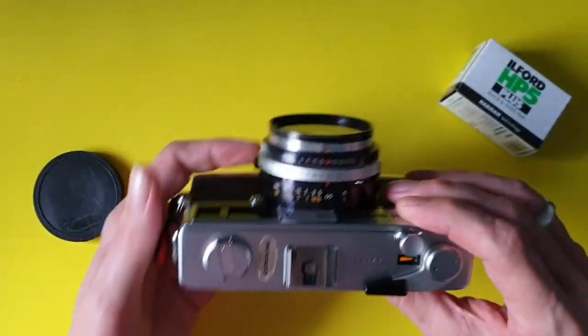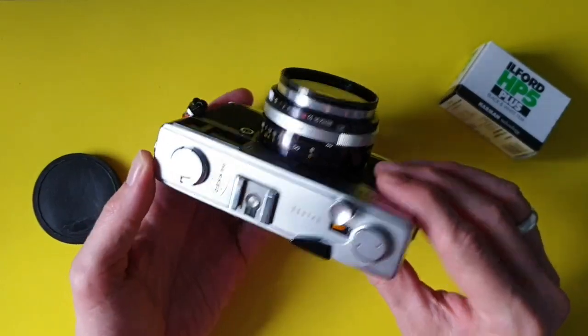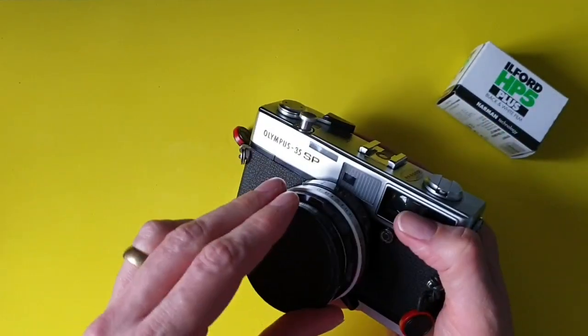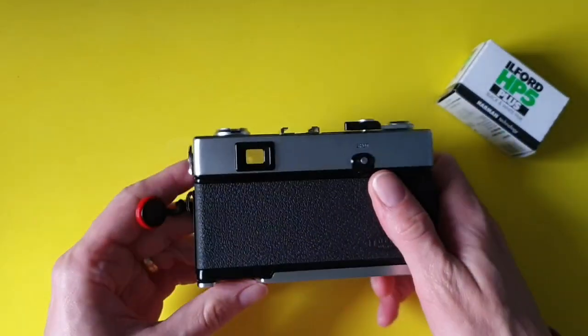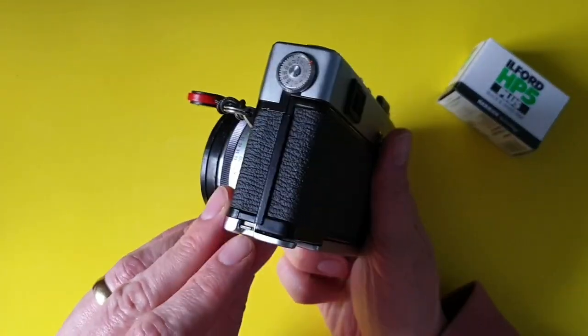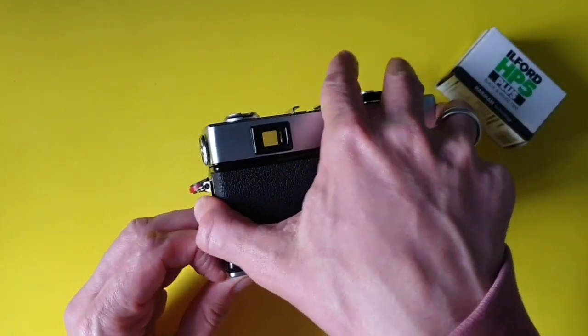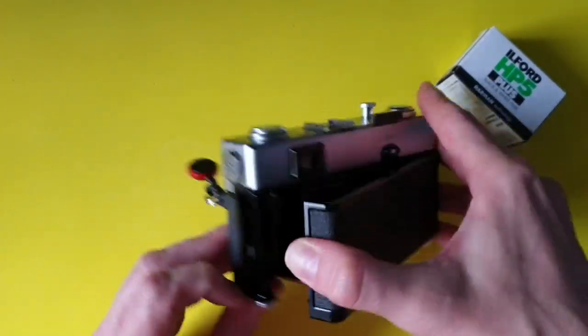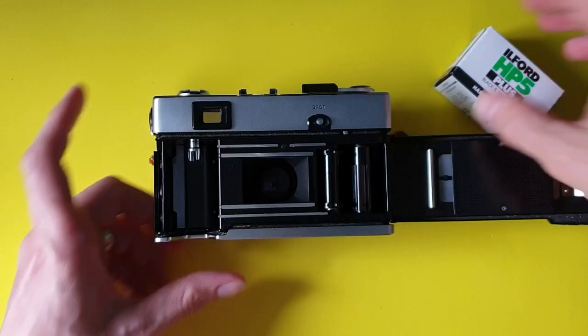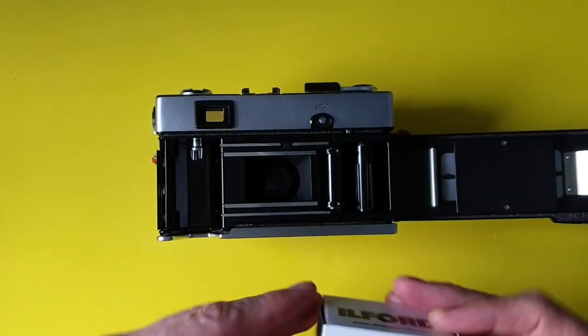You see some of these and they're a bit battered but this is like new. Okay, so you open the back, there's a little lever there. Pull that down, pull that little tab down and the back opens like that, and open the film.